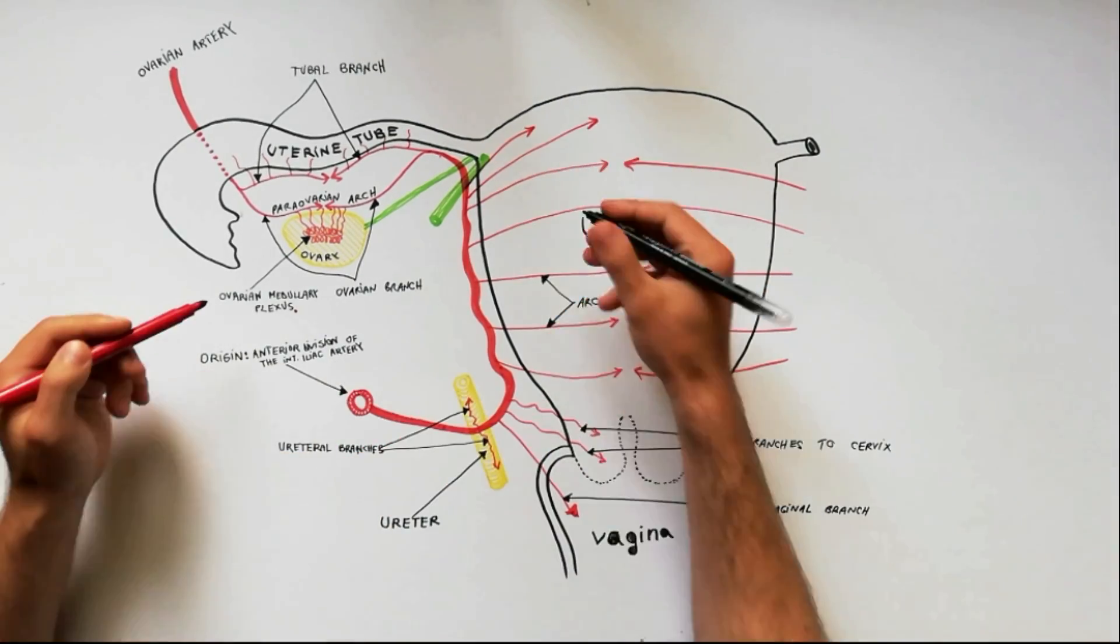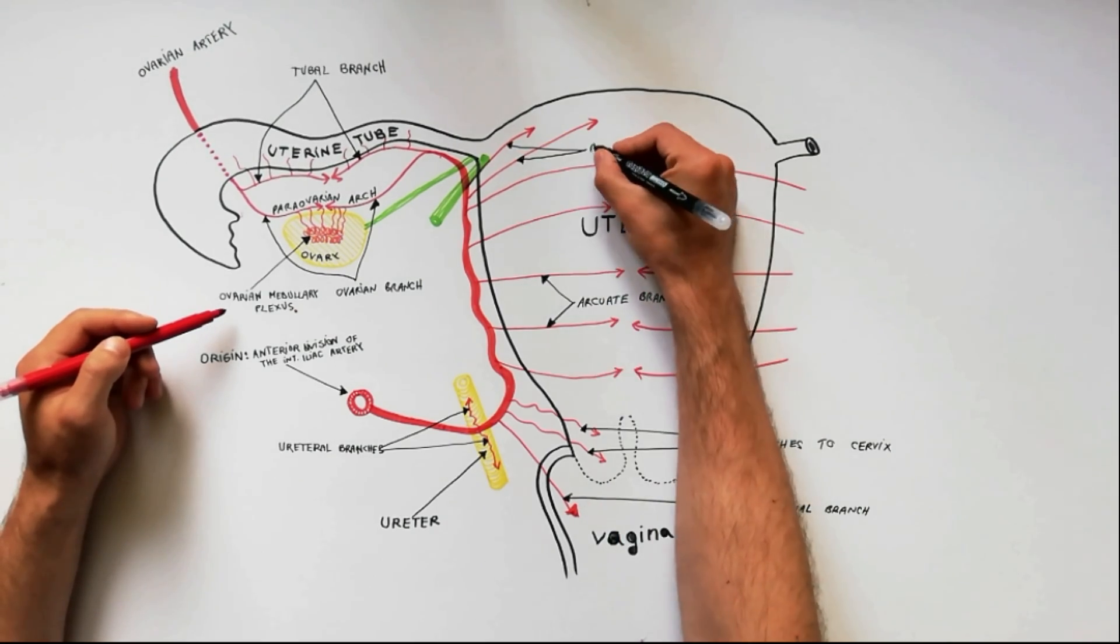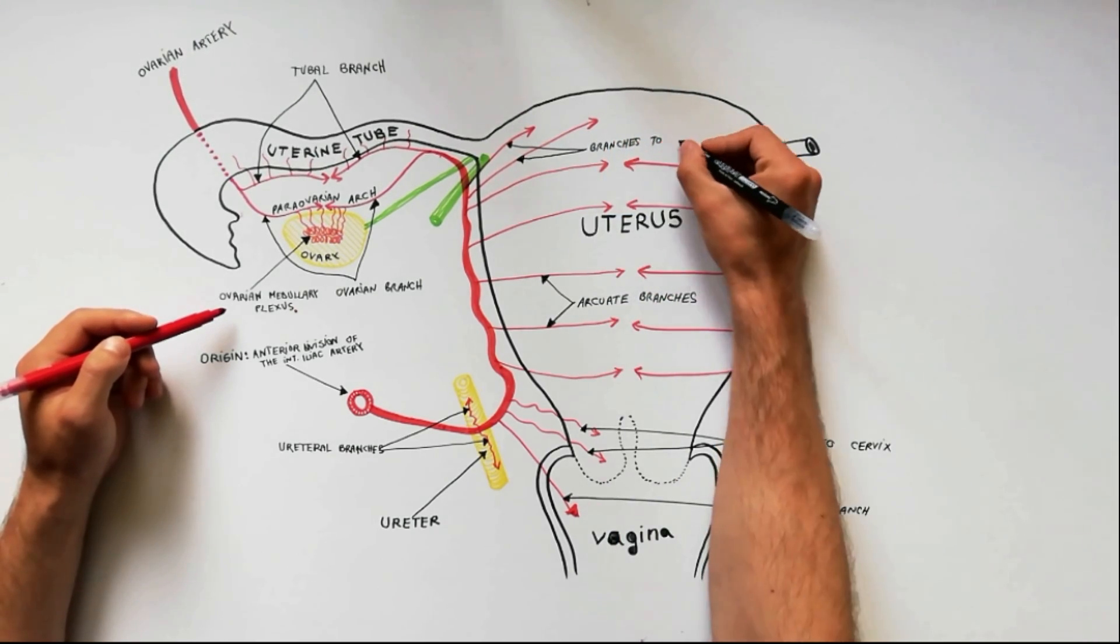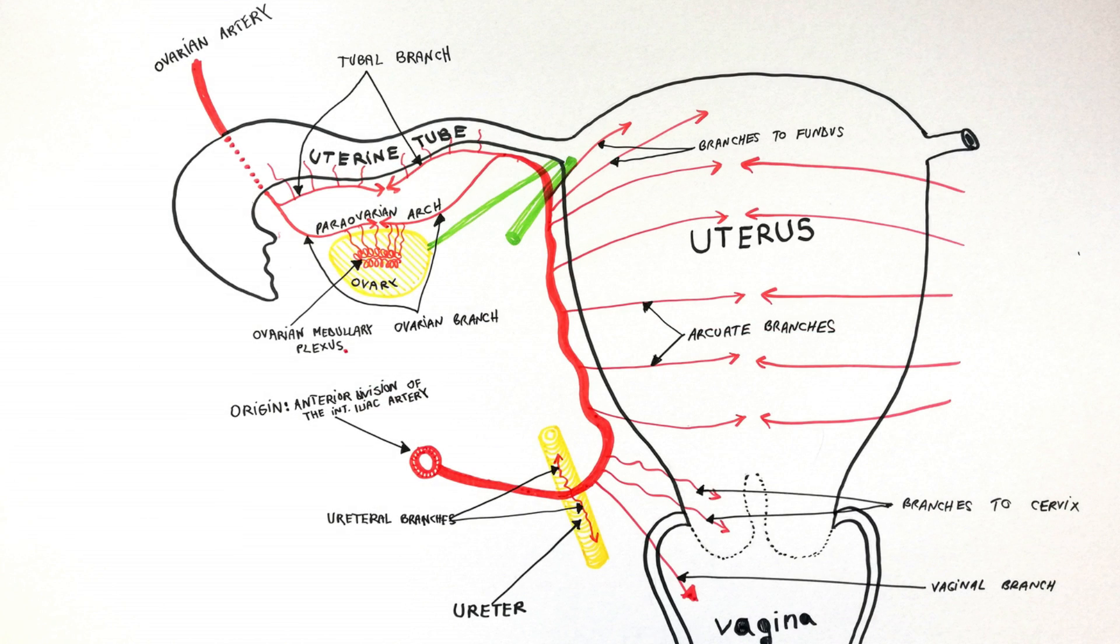At the superolateral angle of the uterus, the uterine artery gives off branches to fundus. Those are the branches of the uterine artery.